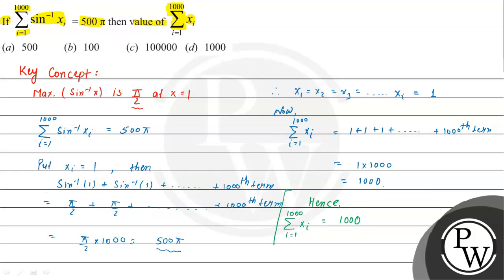Finally, the summation of xᵢ where i is varying from 1 to 1000 is equal to 1000. This is the final answer. Looking at the options given, option B is our correct choice. I hope you understood the solution — best of luck, thank you.